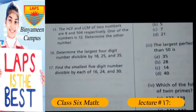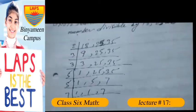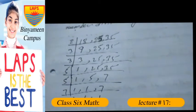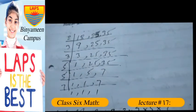Question number 16: determine the largest four-digit number divisible by 18, 25, and 35. First we take the LCM of these numbers: 18, 25, and 35.